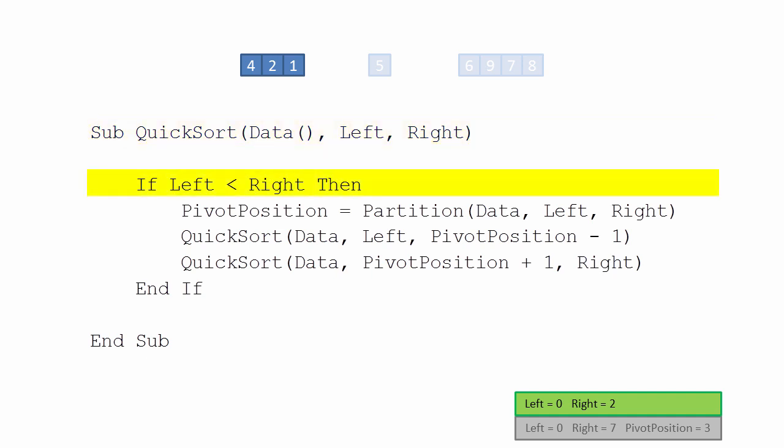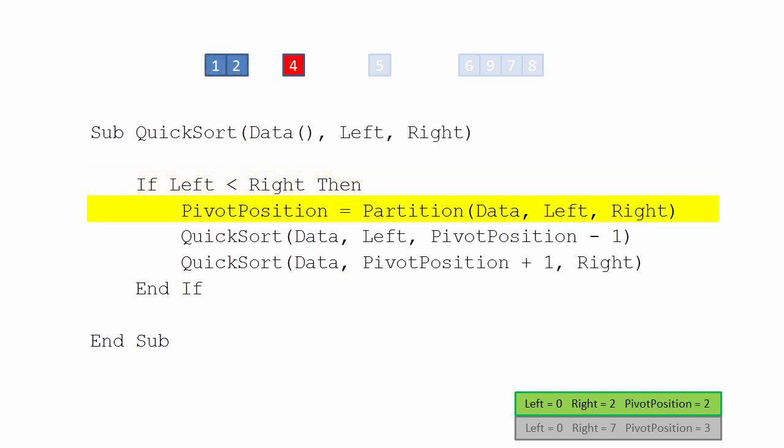Left is smaller than right, so the second invocation also calls the partition function, which returns a value of pivot position that defines yet another set of sublists. In this case, only two sublists have been generated, including a sublist of one item — the pivot value — and a sublist containing two items on the left of it.